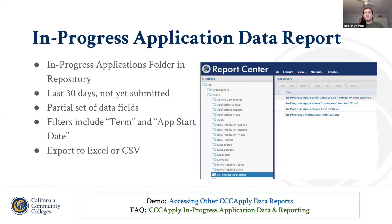Patty has also put the link in the chat for the public documentation for CCC Apply — that's a great resource whether you're looking for a data dictionary or want to know what the most recent update looks like. To finish out our available reports, we'll talk about the in-progress application data report. The link to find it in the repository is here. It includes the last 30 days for applications not submitted and is a partial set of the data fields a student has completed. You can filter it, and it includes name, address, phone number, and email for contact. You can filter by term and application start date.